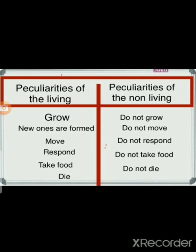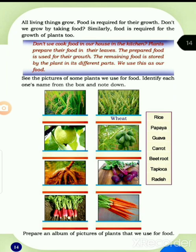Next page, page number 14. All living things grow — food is required for their growth. Living things like animals, birds, and fish grow by taking food. Similarly, food is required for the growth of plants too. Plants prepare their food in their leaves.